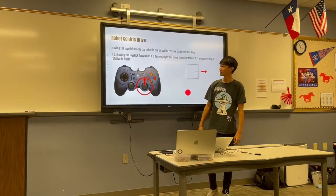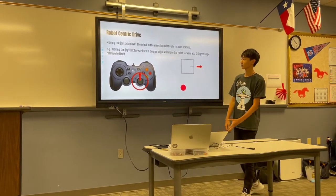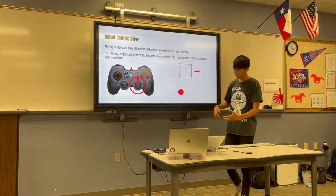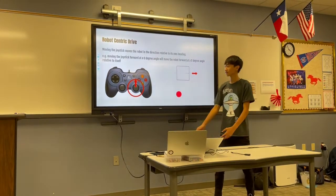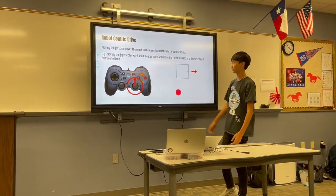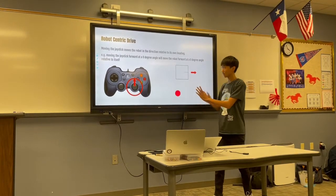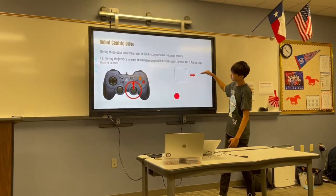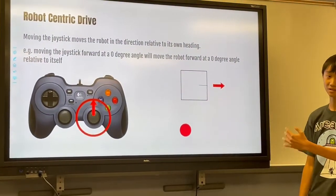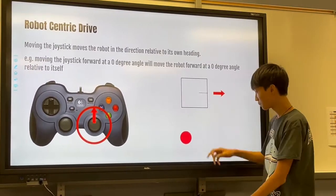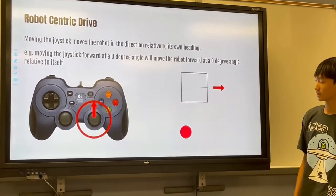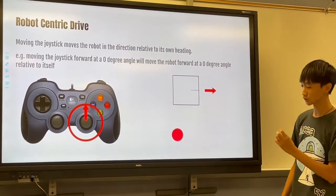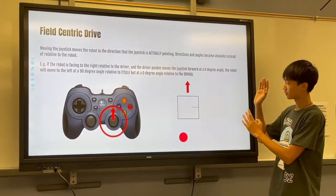Before we understand field-centric drive, I want to talk about robot-centric drive, which is what we normally use when driving a robot. As you can see here, if you point the joystick forward, the robot will move forward — but it's not absolutely forward, it's forward relative to itself. So if the robot was facing to the right, it would travel to the right, because that is forward for the robot.